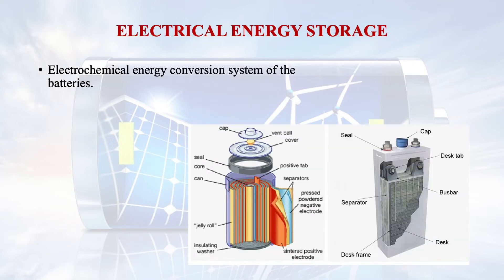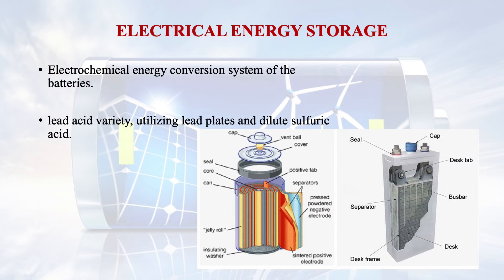Another form of electrical energy storage is electrochemical energy conversion. This was developed by Alessandro Volta around 1800 AD. The most commonly used system is batteries. Common battery systems are of the lead-acid variety and utilize lead plates and dilute sulphuric acid. Various types of miniature batteries and dry cells are also commonly used, including nickel-cadmium batteries, lithium metal hydride batteries, and hydride batteries.